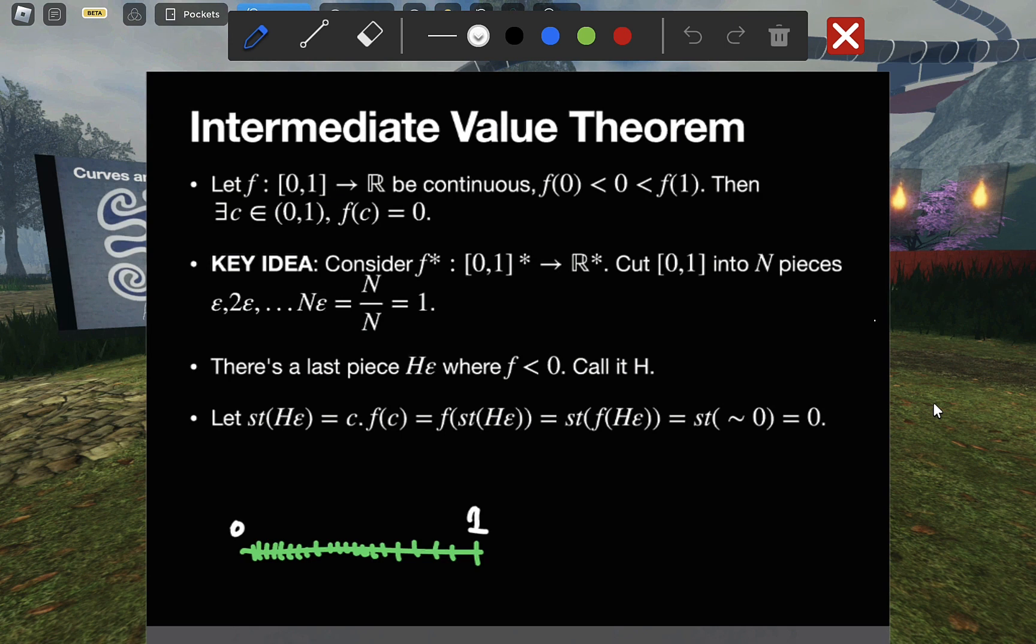And specifically, if we have a function from a closed interval into the reals, if it is continuous, and we set it up so that its left endpoint f is below zero, and its right endpoint f is greater than zero,